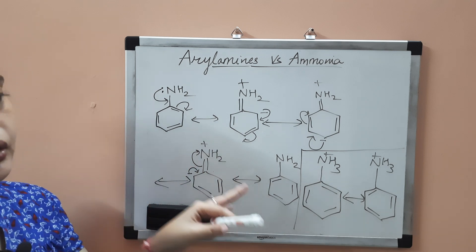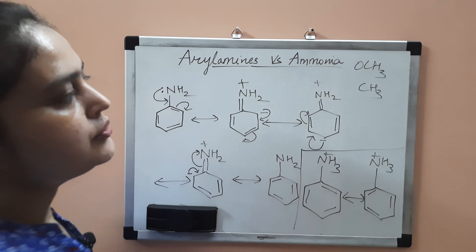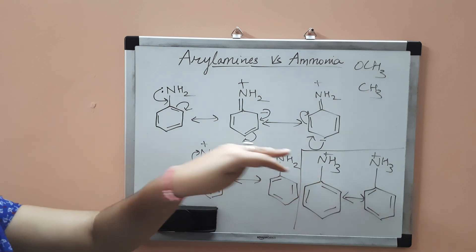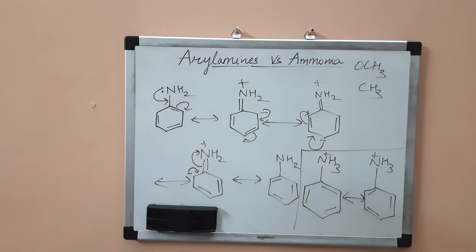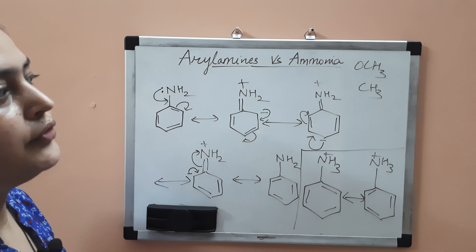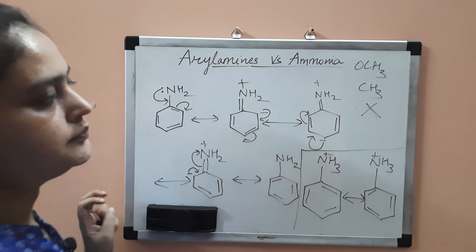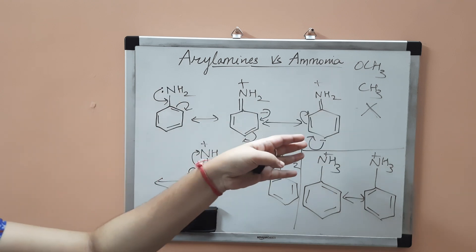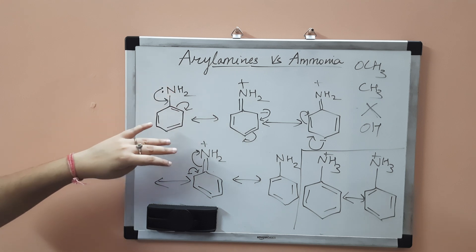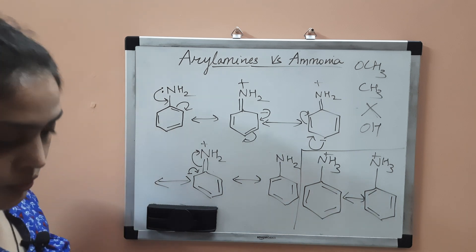If we add electron donating groups like OCH3 or methyl groups, they will release electrons toward the nitrogen atom, so the basicity increases and nitrogen will readily accept a proton. On the other hand, if you add electron withdrawing groups like chloro, fluoro, or OH groups to aniline, these will pull electrons from the nitrogen atom, so it will not be easily protonated and basicity decreases.